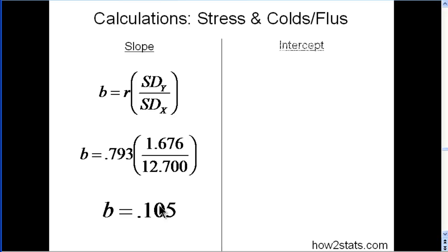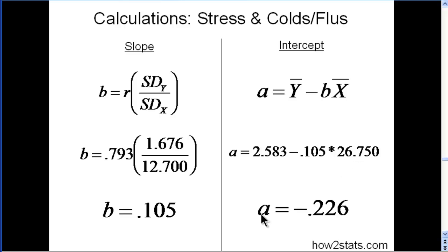Now let's look at the intercept. The formula again, alpha equals the mean of y, so colds, minus the slope times the mean of x. We can solve that simply. Mean 2.53 minus the slope, which we figured out here, times the mean of x, which is stress. Then we get an intercept, or alpha, equal negative 0.226.